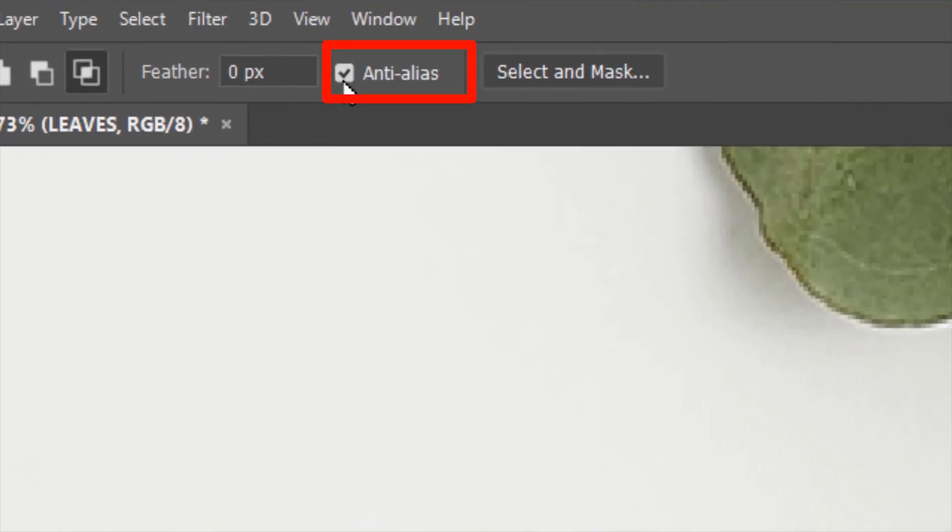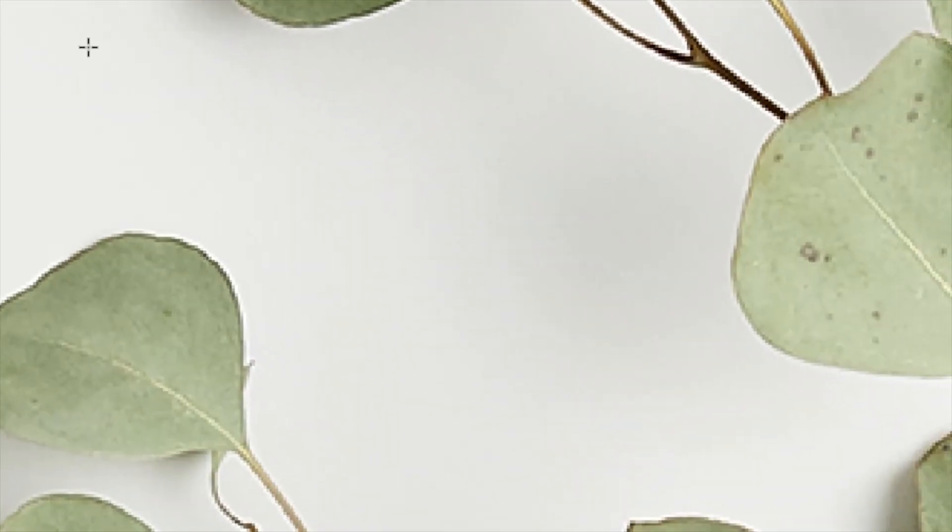And with the anti-alias checked, if we make a selection, the edges will be plain or uniform. Press Q again to get out of this preview mode.